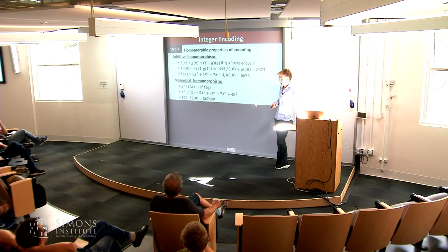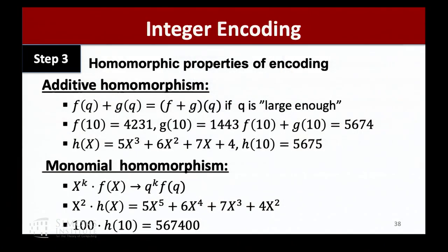We also have a monomial homomorphism. I can compute X^k times F(X), which just maps to Q^k times F(Q). So X² times H(X) maps correctly in the encoding space as well.